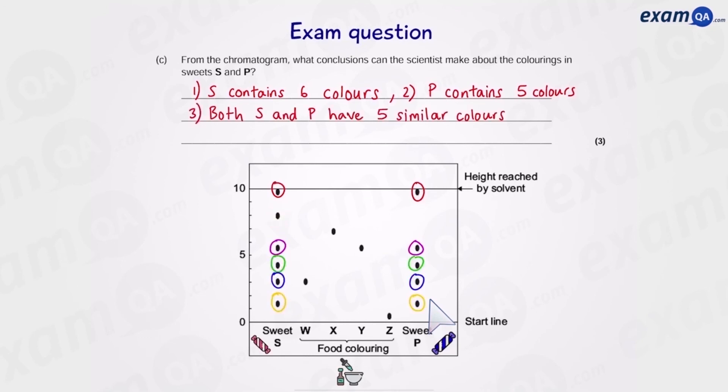Another point you could raise is that both S and P have the same five colors circled. So right now we have three marks. However, let's see what else we could have said. Both contain W and Y and neither contain X or Z. So in total there are five points you could have mentioned for this particular question.